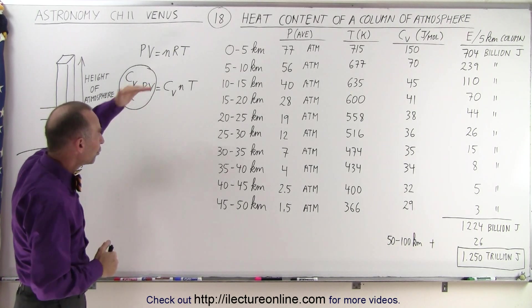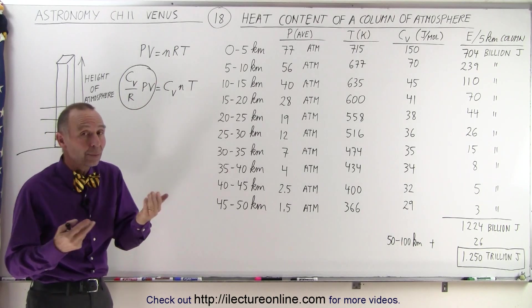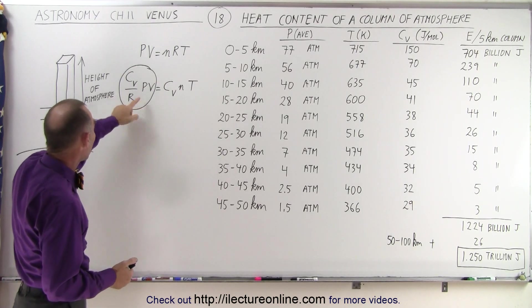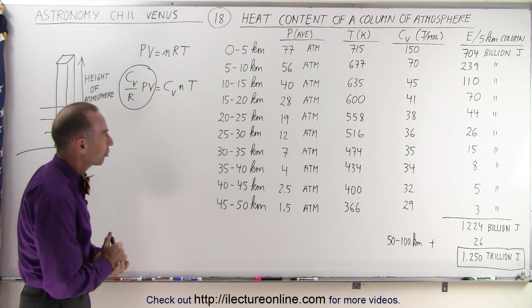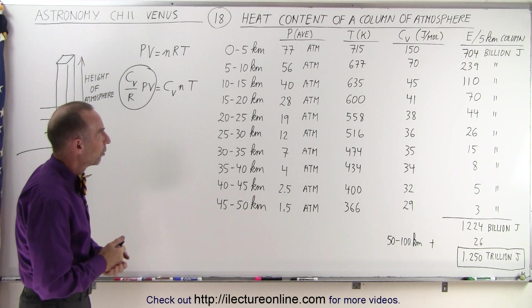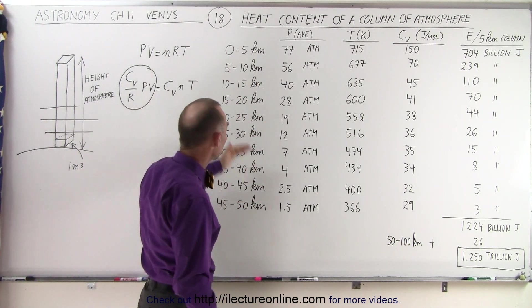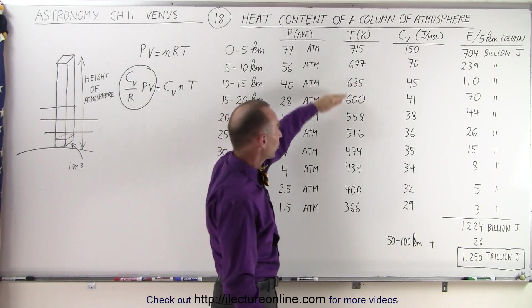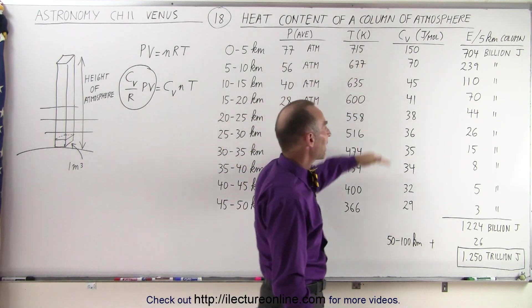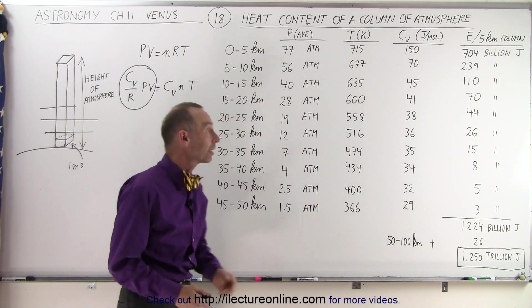And of course, we do that for each of the layers, and then we have to multiply the results by 5,000, because there's 5,000 meters in a 5 kilometer section. So here we have all the average pressures for each of the 5 kilometer regions. We have the temperature, and we have the specific heat.